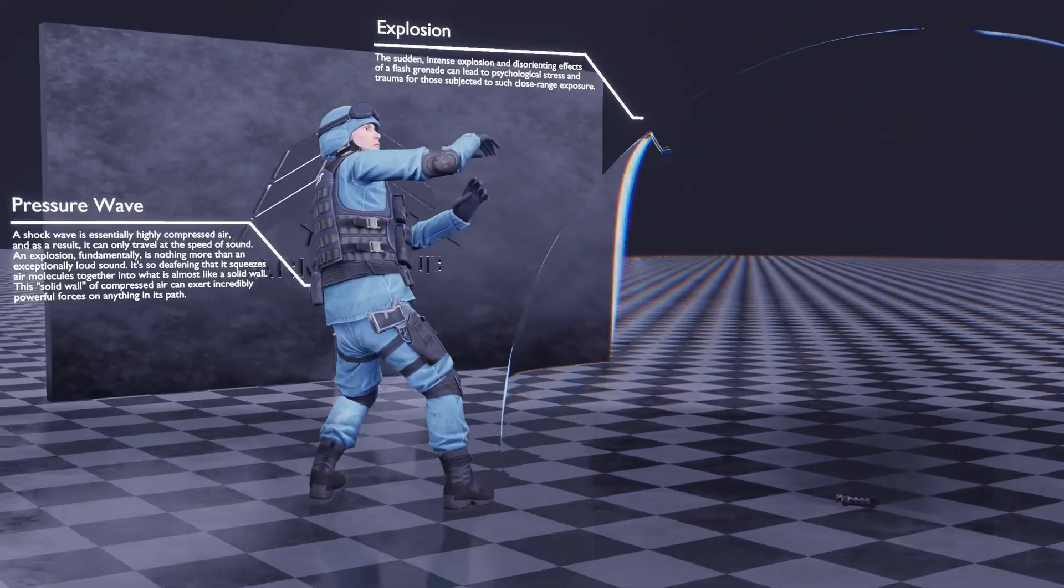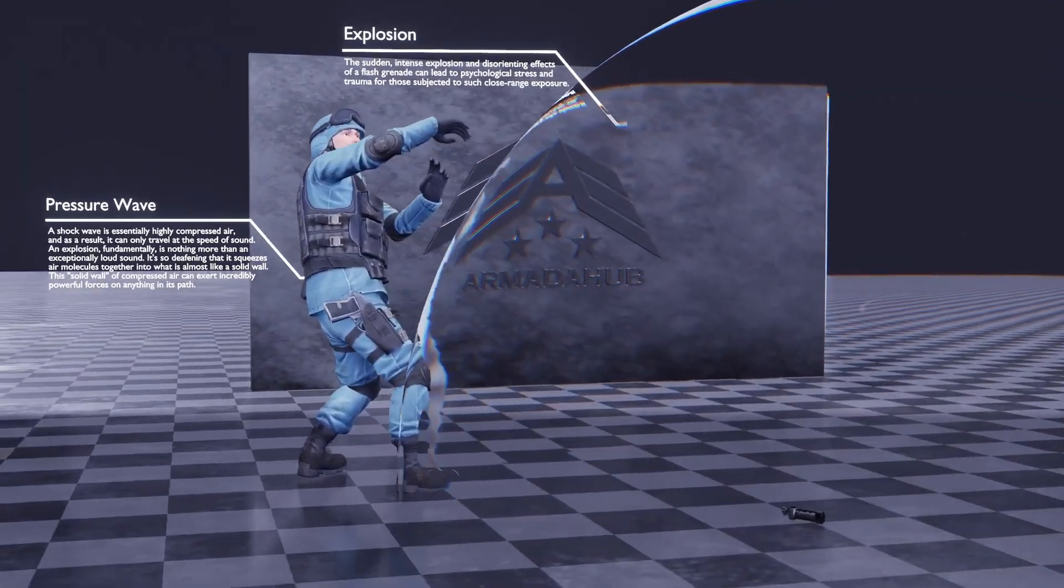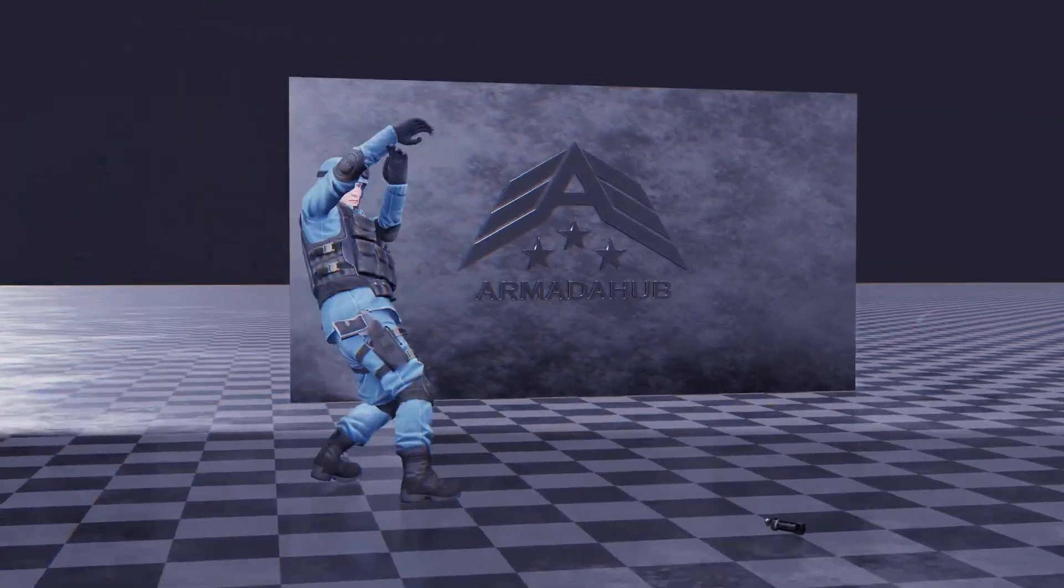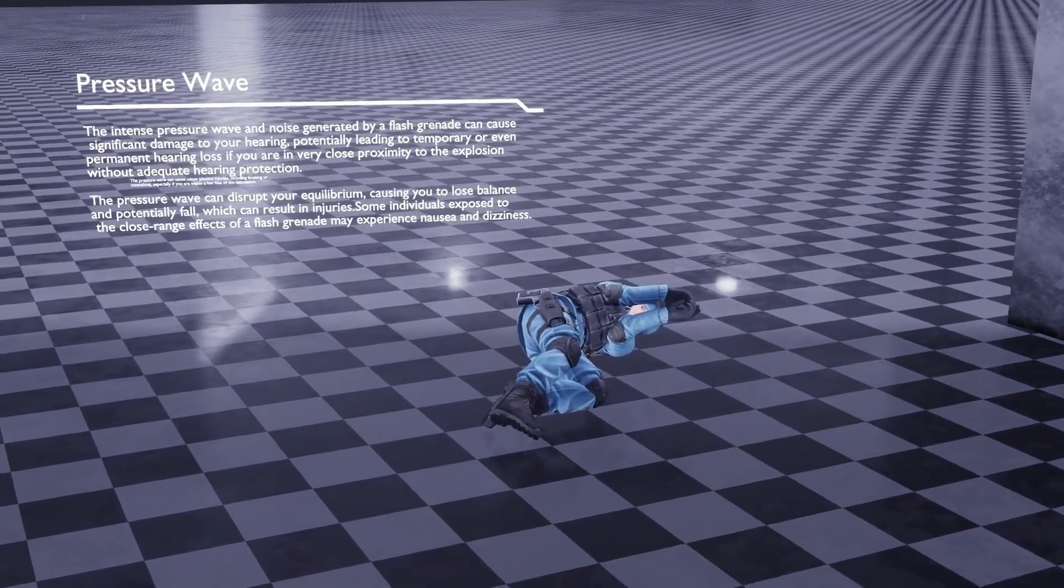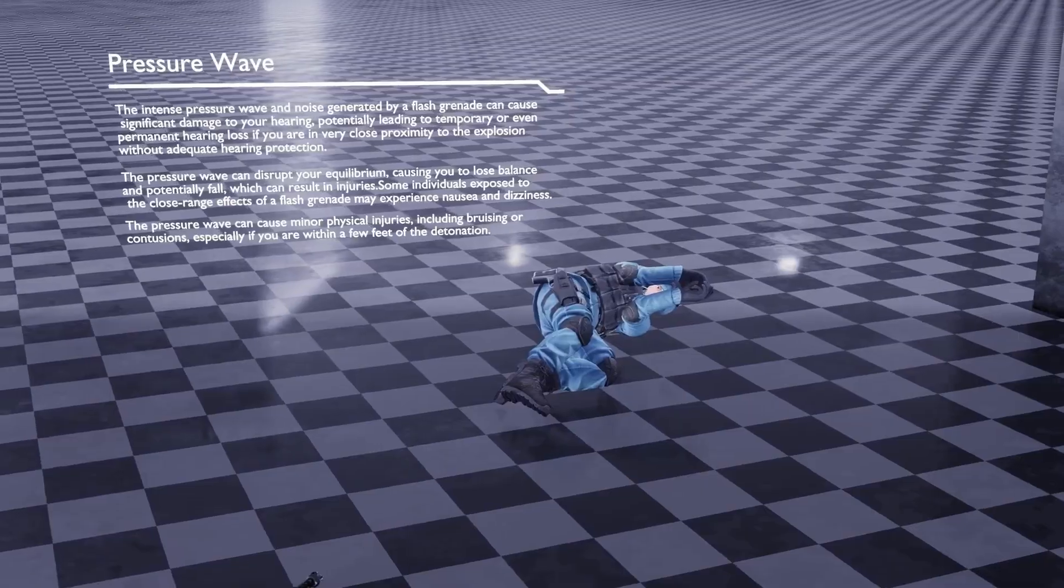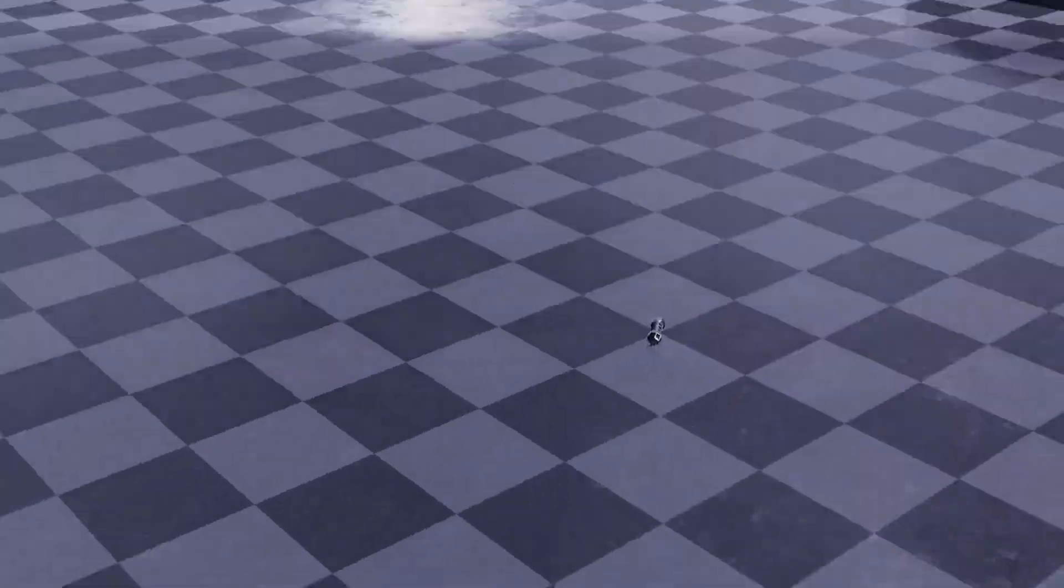When pressure is released from the safety lever, the striker, driven by a spring, rotates on its axis, dislodging the lever. The striker then hits the M42 primer, a small explosive component located at the top of the grenade.